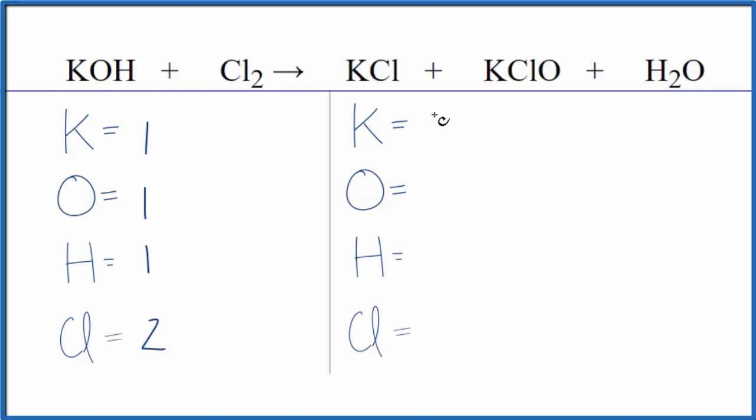On the product side we have one potassium plus we have this potassium right here, so we have two potassium atoms. Make sure you count all those. Oxygen we have one plus again we have one oxygen here in the water, two of those. We have two hydrogen atoms and two chlorine atoms.